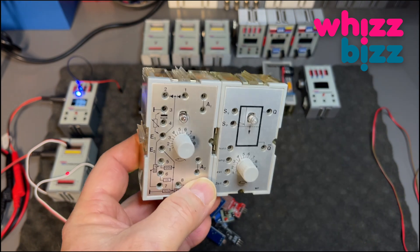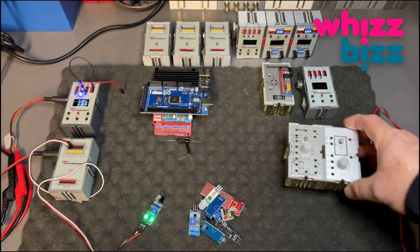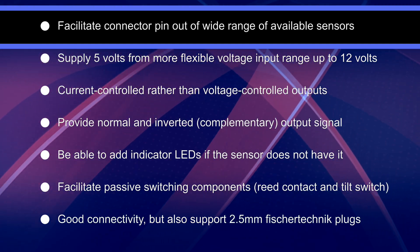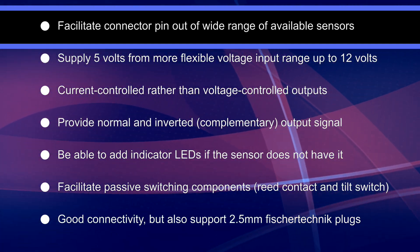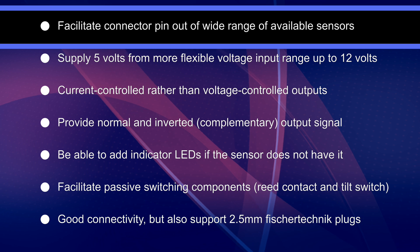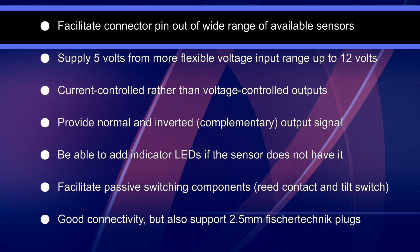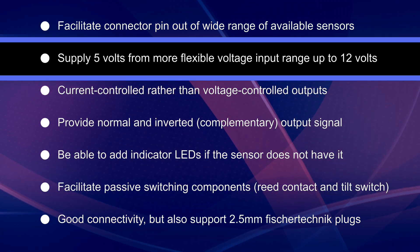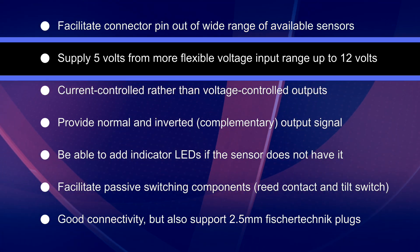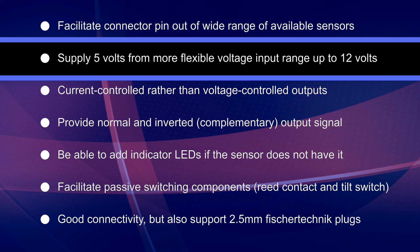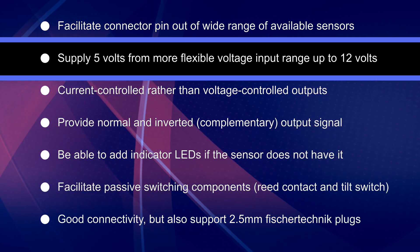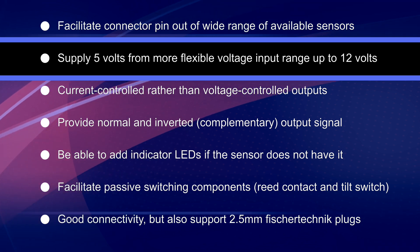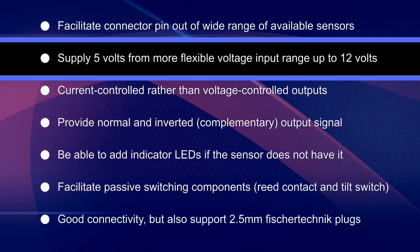So let's see what our ideal universal adapter must be able to do. First of all it has to facilitate the connector pinouts, all the differences in these connector pinouts of the available sensors. Then it must have some kind of voltage regulator to enable us to supply five volts to the sensor board while accepting a more flexible input range of the voltage up to 12 volts.